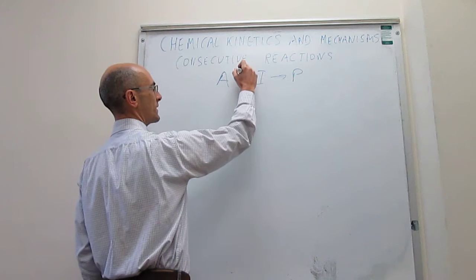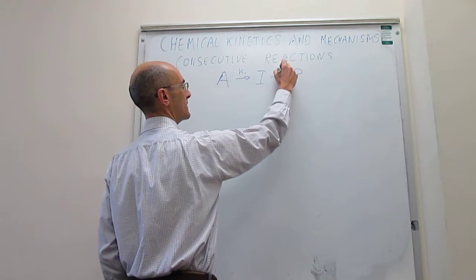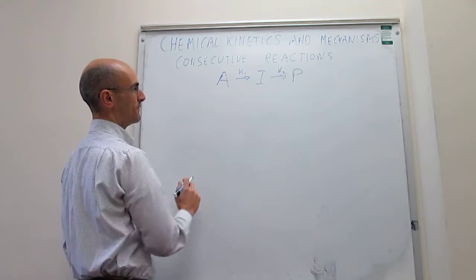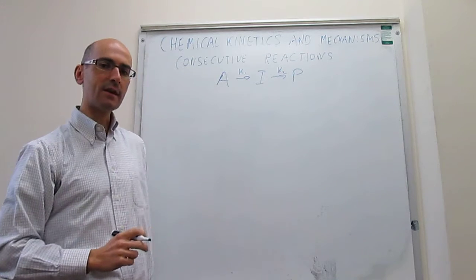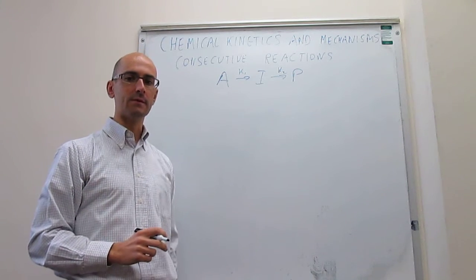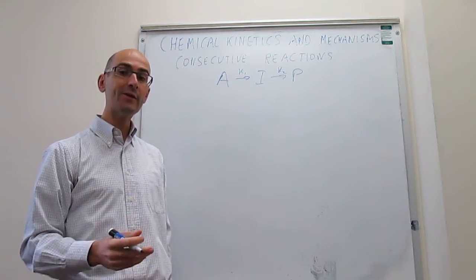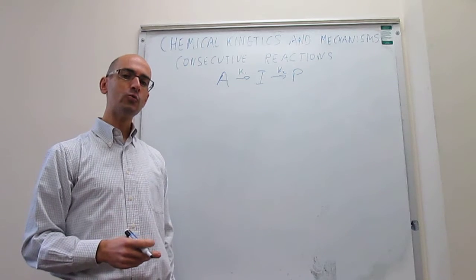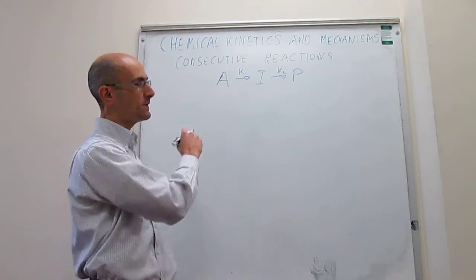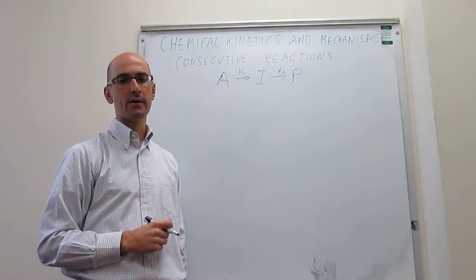We are going to do a kinetic analysis of these reactions, assuming the rate constant for the first step is K1 and the rate constant of the second step is K2. The goal here is to obtain the integrated rate laws for each one of the species, especially reagents and products.